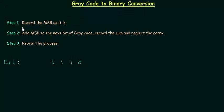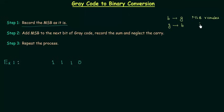In step number one we have to record the MSB as it is. When we convert binary to gray code or gray code to binary, the MSB — most significant bit — remains as it is. So in this case the MSB is 1 for the gray code, and we record it as 1 for the binary number as well.